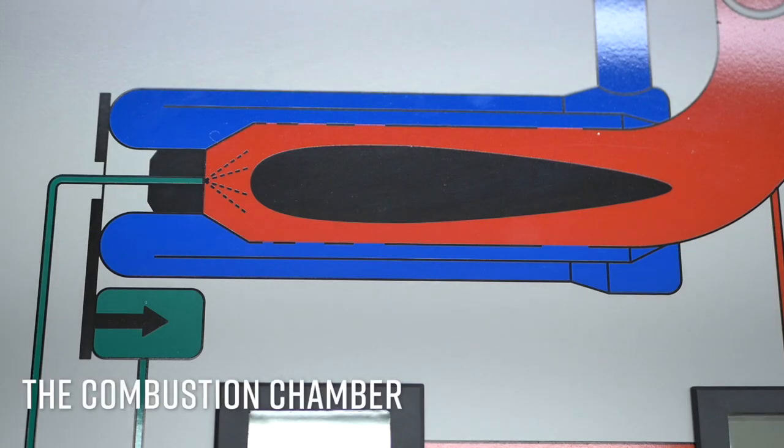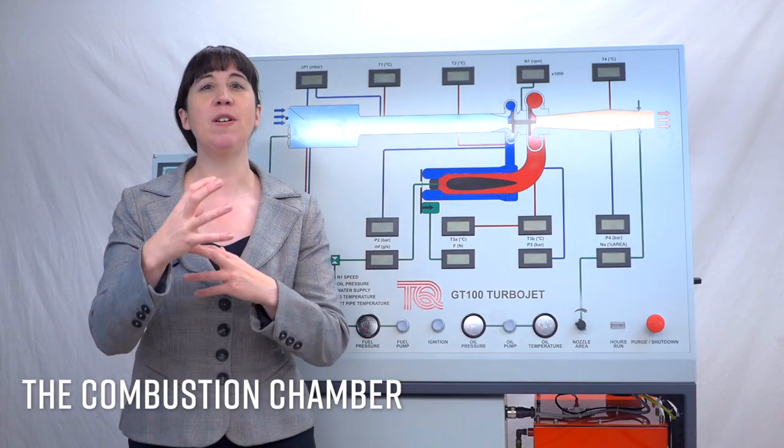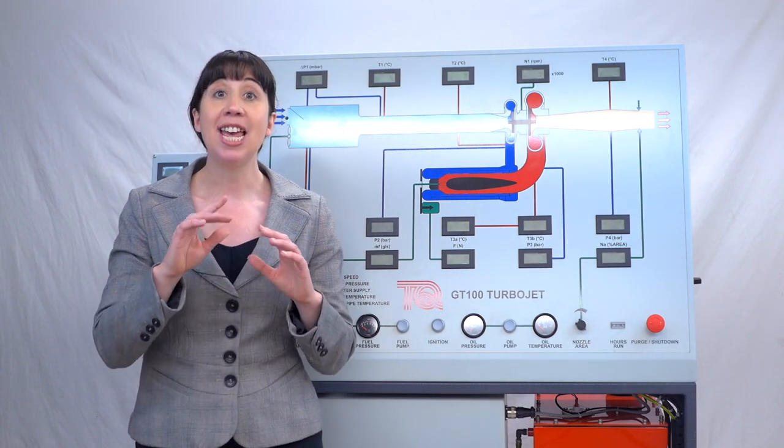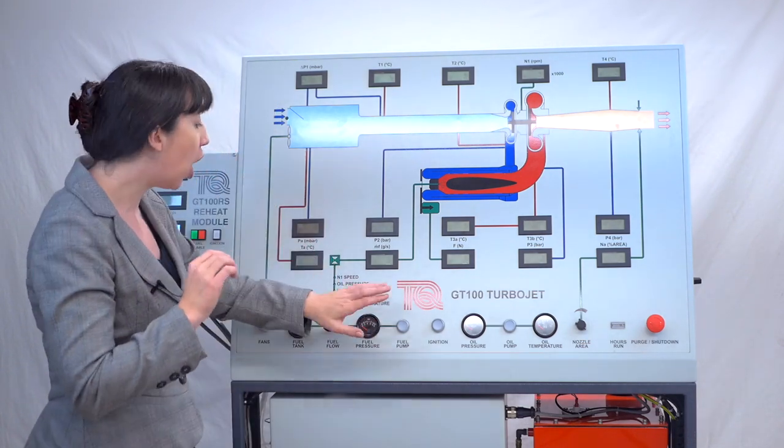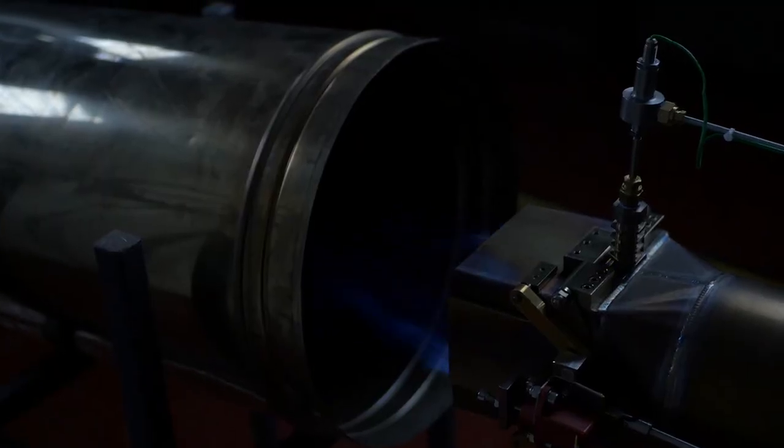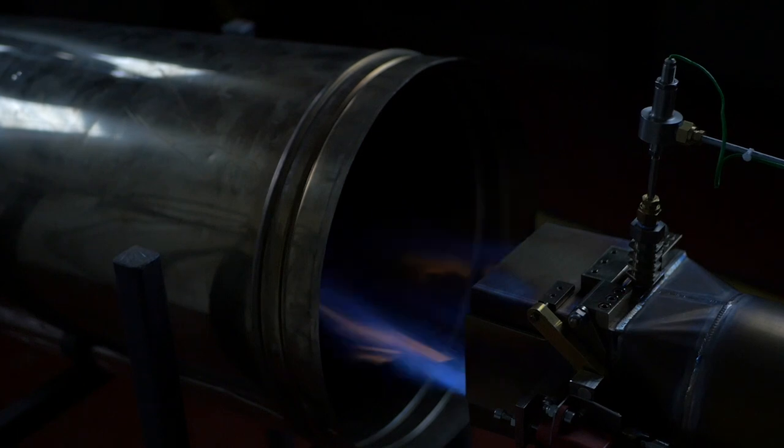This is the combustion chamber where it receives air from the compressor. This air mixed with a fuel vapour enters the chamber through a vaporising nozzle. Then when you press the ignition button on the control panel, a spark igniter creates the first ignition and the combustion then keeps itself burning until the user stops the fuel supply.